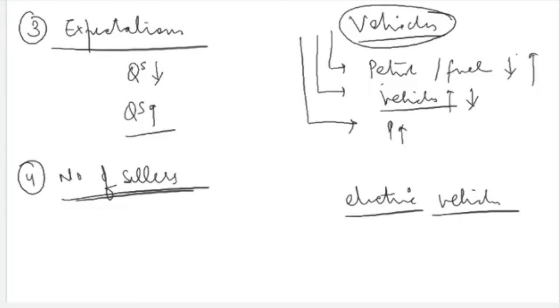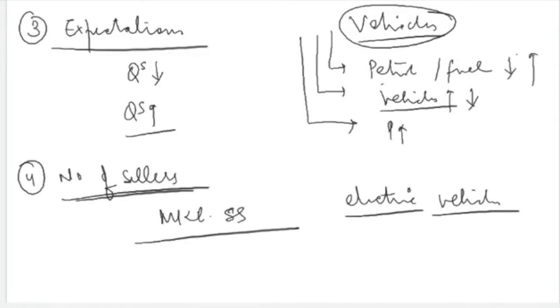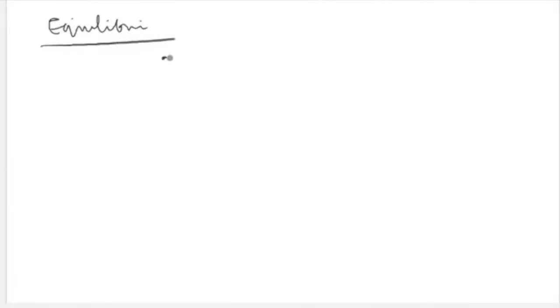The fourth and last reason that could shift the supply curve is the number of sellers. Just as we discussed that the number of buyers could affect demand, the number of sellers affects the market supply curve. It is a direct relationship: if the number of sellers increases in the market, the quantity supplied in the market will also increase because more people are now selling commodities. So the number of sellers is another key factor explaining shifts in supply.